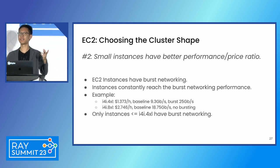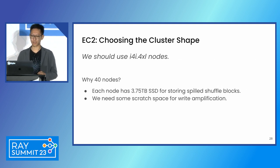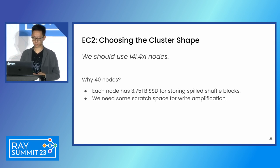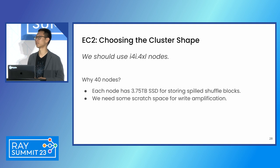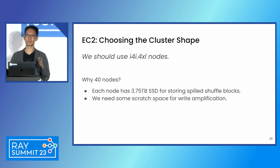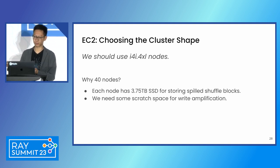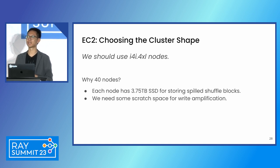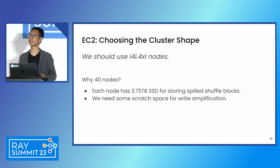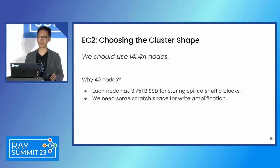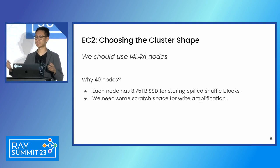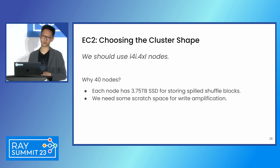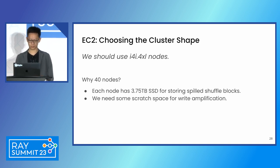Combining these two principles, we ended up deciding to use the i4i 4xlarge nodes. We need 40 nodes because we are processing 100 terabytes of data, and each of these instances has a fixed amount of SSD attached to it. We need some scratch space for write amplification. So that's why we need 40 nodes in the end.